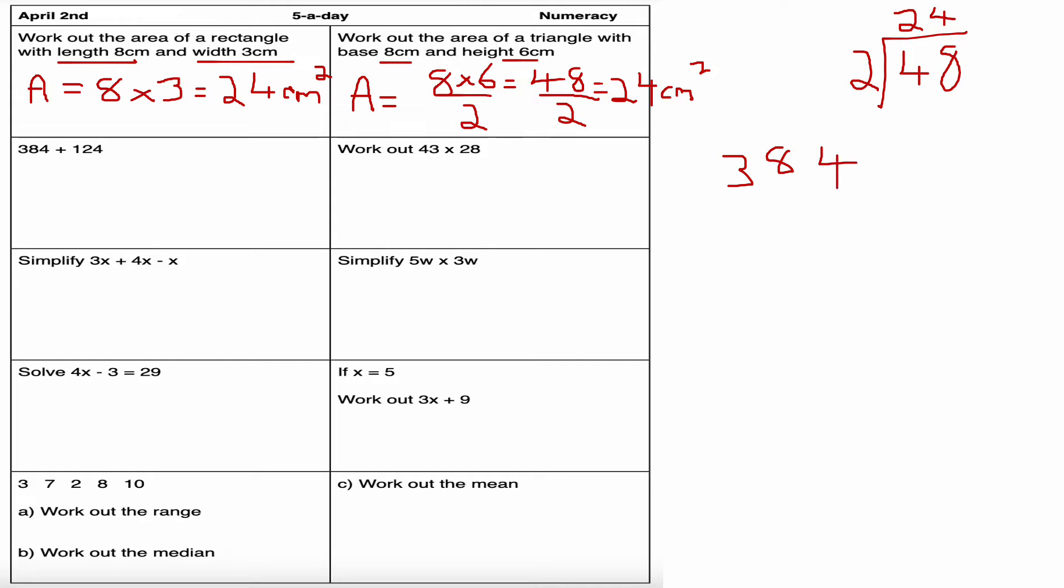Next question: 384 add 124. It's column addition here. 124, 4 plus 4 is 8, 8 plus 2 is 10, so zero carry the one, 3 plus 1 plus 1 is 5. The answer is 508.